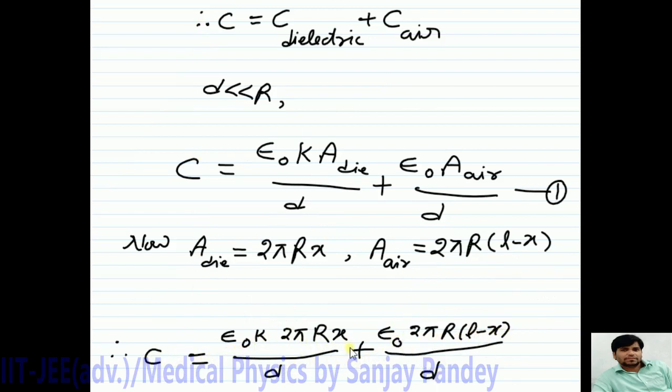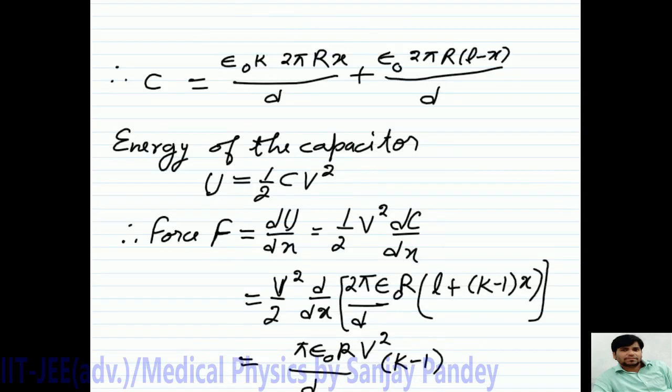Now, the electrical potential energy of the system will be U equals half C V square. Therefore, force F equals dU upon dX as capacitor is connected with voltage source. So, V is constant. Therefore, the differentiation dU upon dX will be 1 upon 2 V square as V is constant into DC upon dX because U is half C V square.